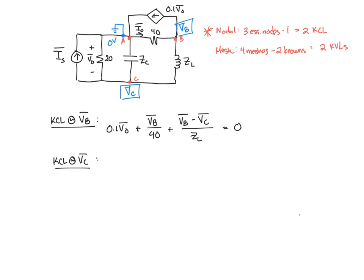So next is our KCL at VC. We should have four terms because there's four elements connected to it. First, we have current IS exiting, then the current through the 20 ohm resistor is given as VC minus 0 over 20. We have the current through the capacitor, which is VC minus 0 over ZC, and then the current through the inductor given as VC minus VB over the impedance of the inductor. That must equal 0. So looking at this, we have two equations, unknowns VB and VC, and then V0.